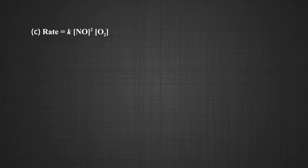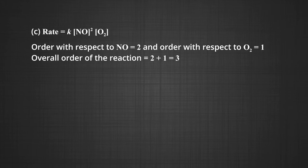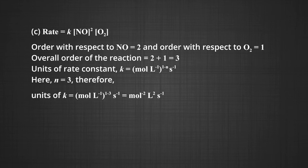Part C: rate = k[NO]²[O2]¹. Order with respect to NO is 2 and with respect to O2 is 1. The overall order = 2 + 1 = 3. Units of k = (mol/L)^(1−3) s^(−1) = mol^(−2) L² s^(−1).